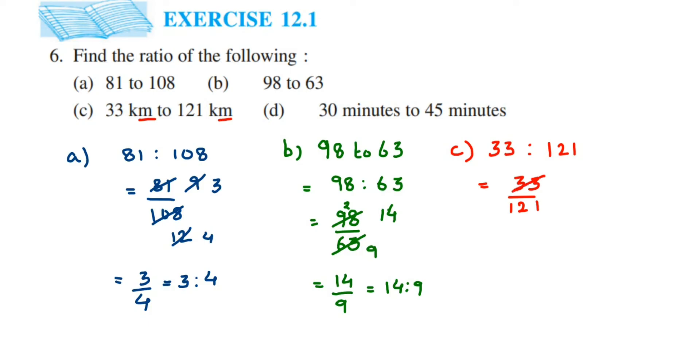We can cancel this in 11 table: 11 threes are 33, 11 elevens are 121. So you got here 3 by 11. Convert back this into ratio, so this will become 3 is to 11.